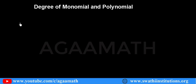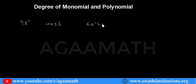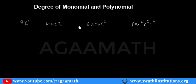Let me take some examples of single terms. Here is 9x². This is one single term. If I write 6a²bc³, it is also a single term. If I write pq²r³s⁴, all of these are monomials because they are single terms.